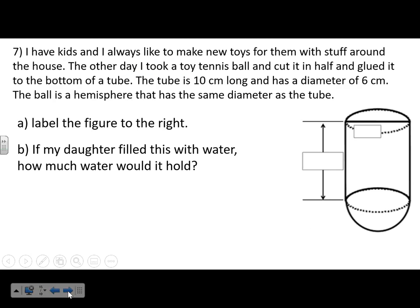Last problem — and there's one similar to this on the test. I have kids and I like making new toys. I took a toy tennis ball, cut it in half, and glued it to the bottom of a tube. The tube is 10 centimeters long with a diameter of 6 centimeters. The hemisphere on the bottom also has a diameter of 6 centimeters. A hemisphere is literally just a half sphere.